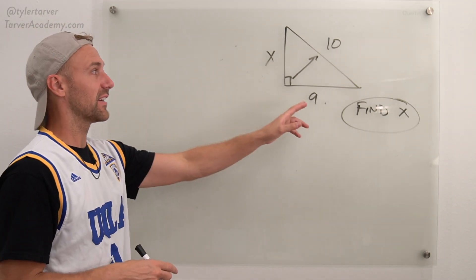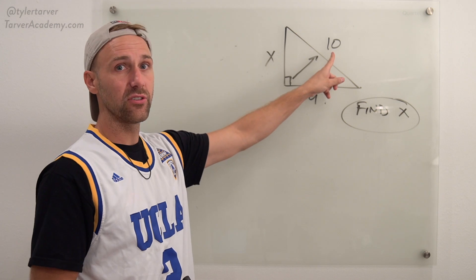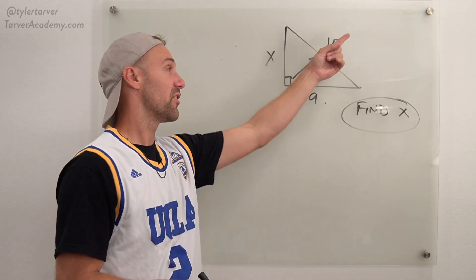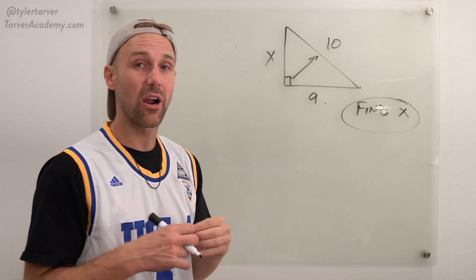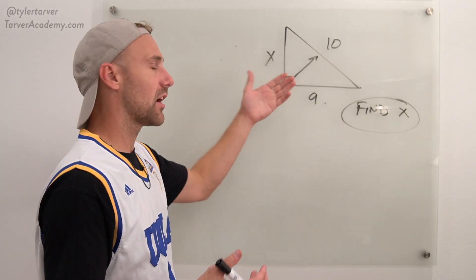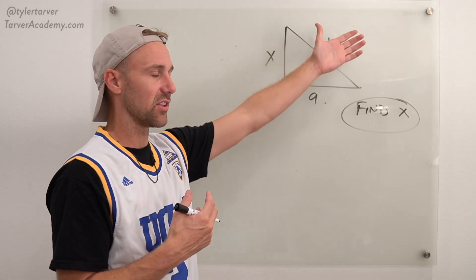Okay. So we want to find X. You've got your hypotenuse which is 10 and we know that's the hypotenuse because it is opposite the right angle. It's also going to be our longest side in this. It's opposite the largest angle is the longest side.